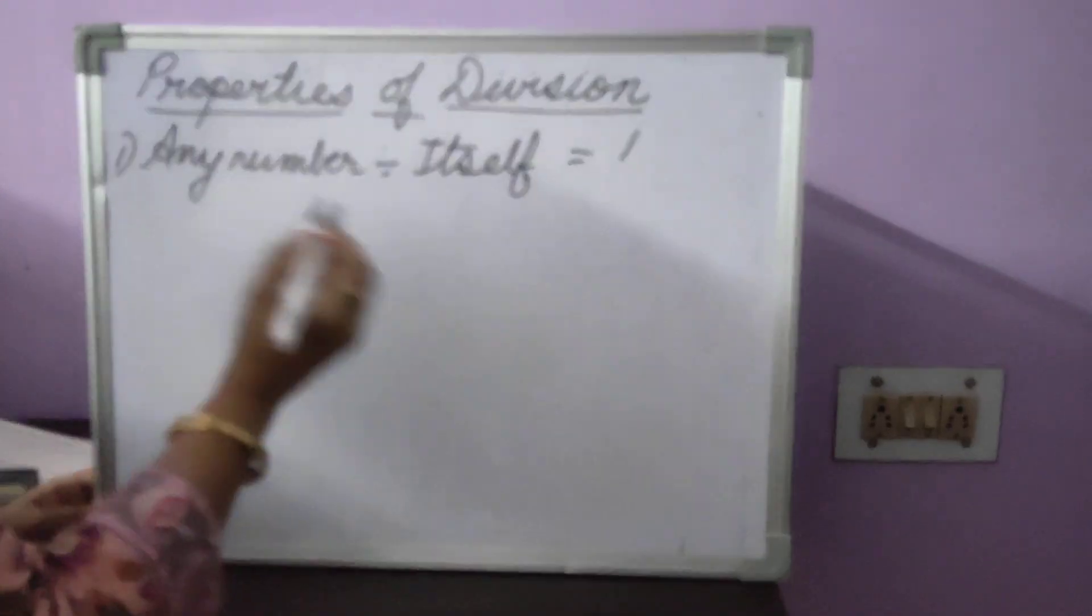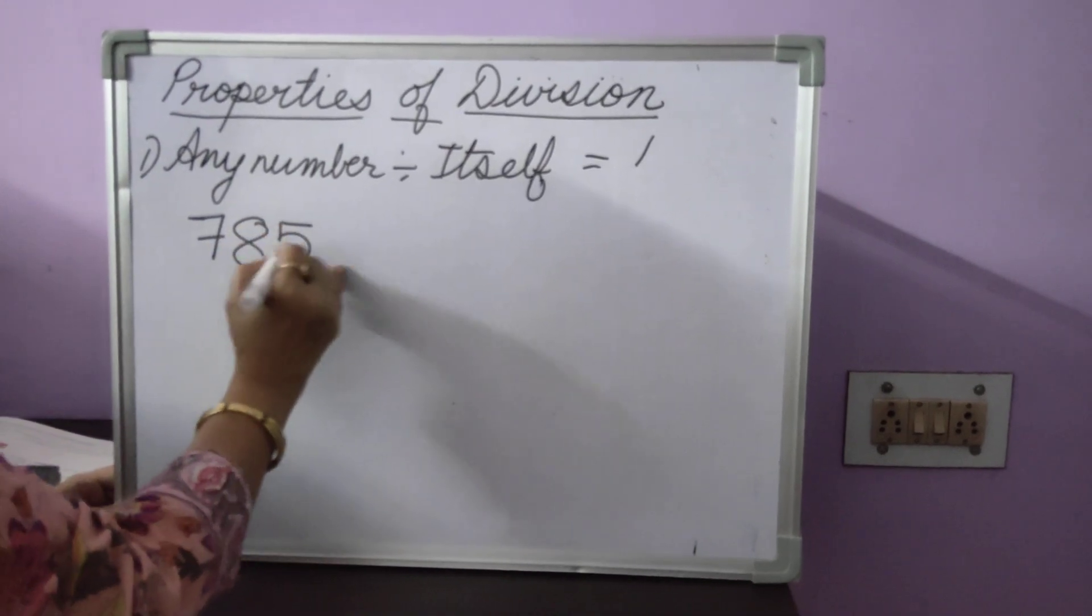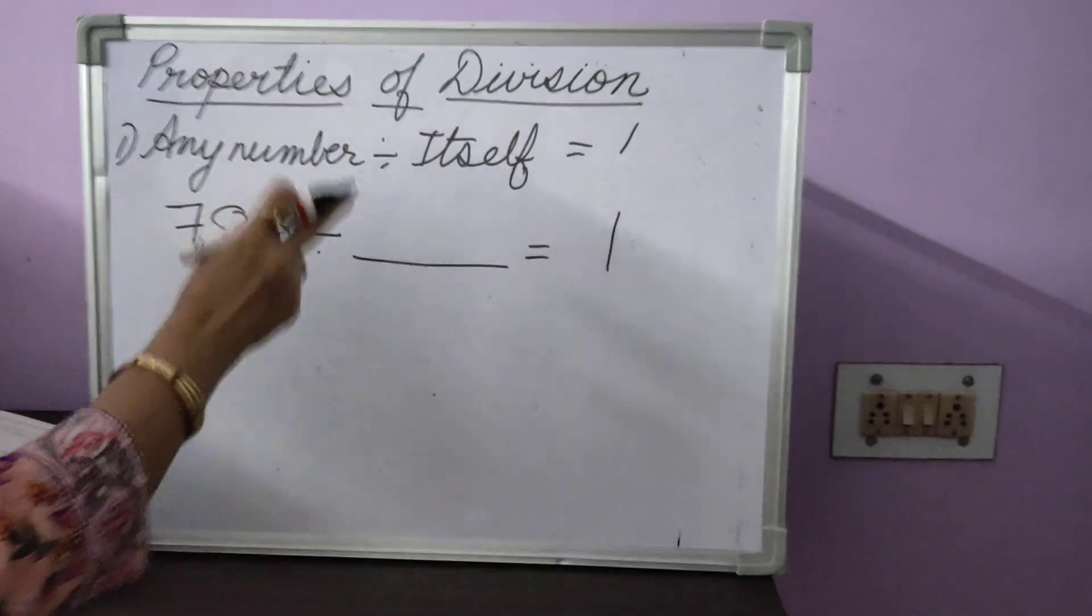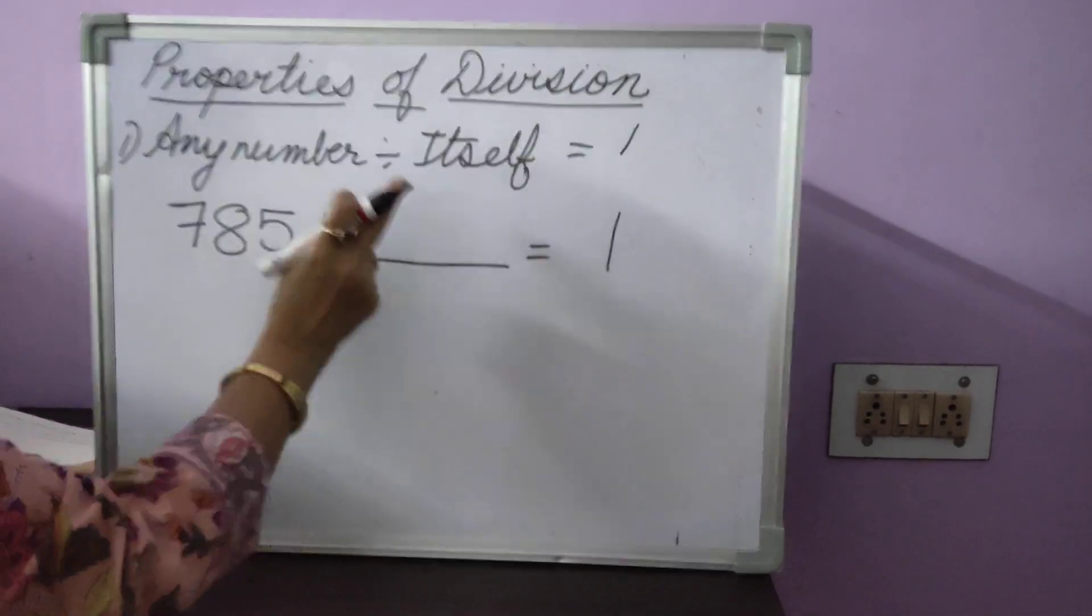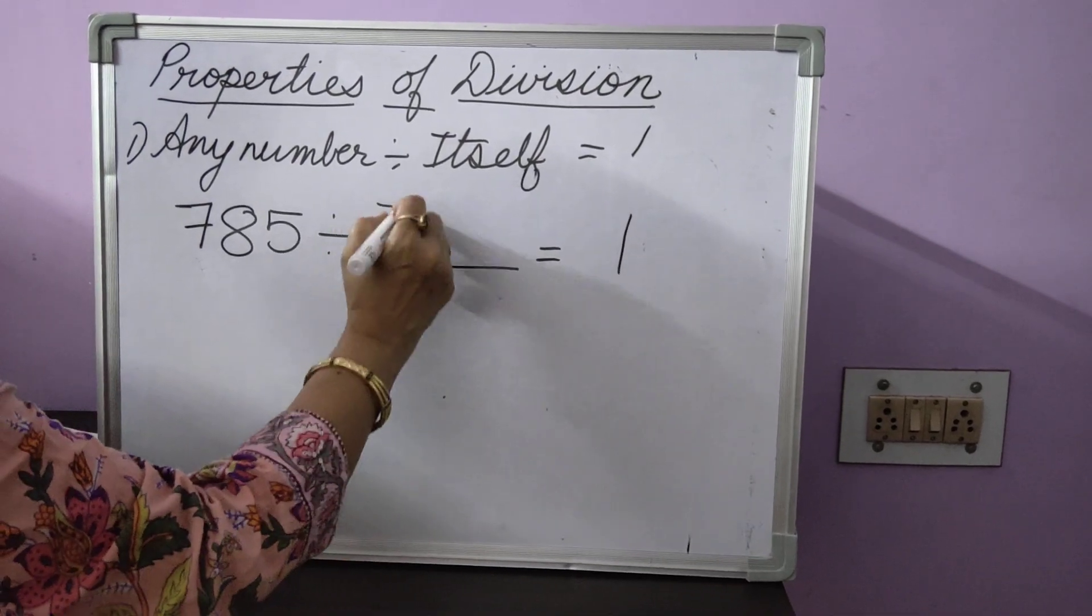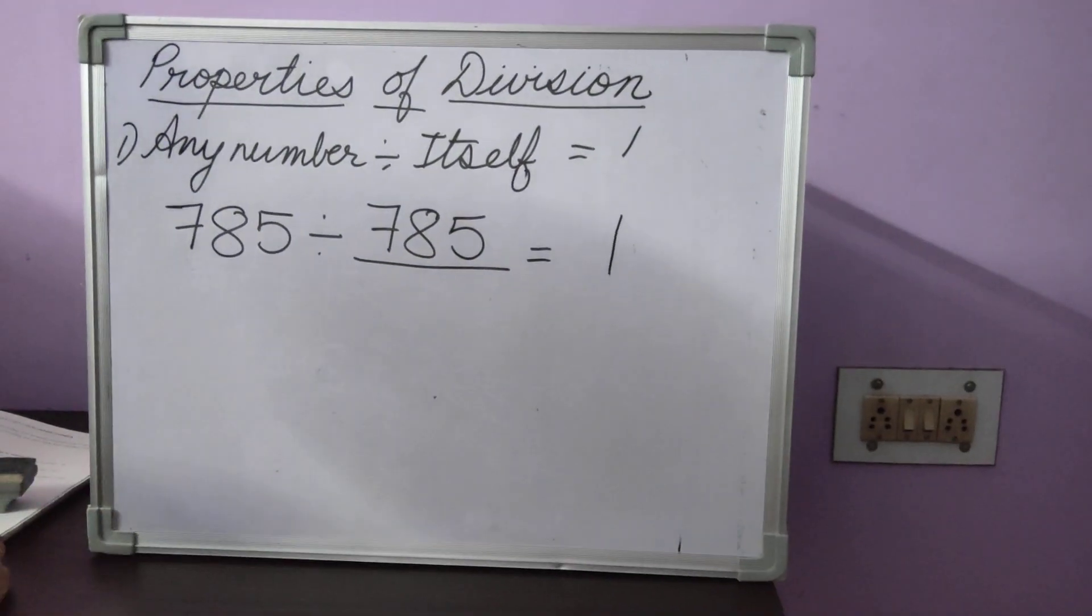For example, I ask you to fill in the missing number here. 785 divided by a number is equal to 1. Now, we know the property that if a number is divided only by itself, then you will get the answer 1. So, the missing number over here will be 785.